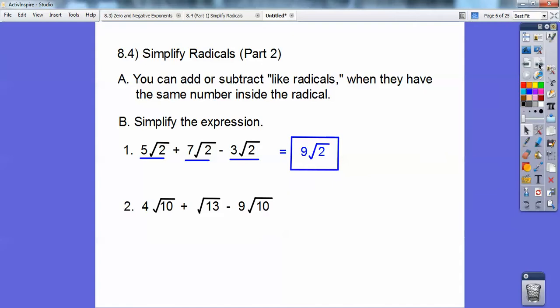Now 10 is 2 times 5, so nothing comes out of √10 right there. But I do have some like radicals right here. I have 4√10 minus 9√10 gives me -5√10. And then this doesn't pair up with anything, so that just stays all by itself. So -5√10 + √13, and that's your answer. You can write √13 - 5√10 if you want. That would be fine too.